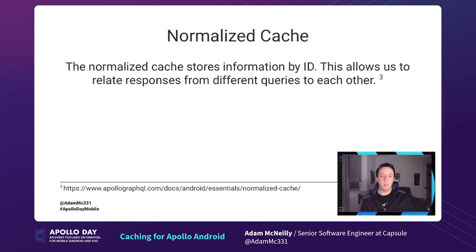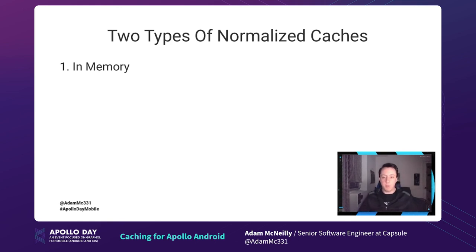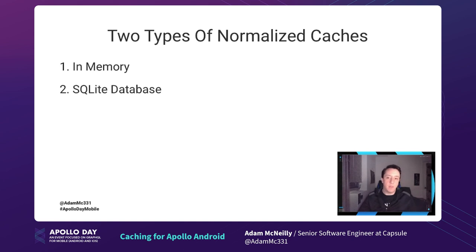The normalized cache stores information by ID, which allows us to relate responses from different queries to each other. We have two types: an in-memory normalized cache, which stores things in memory and lives as long as your application does — when the user kills the app, we lose that information. The second is a SQLite database, where all responses are persisted on-device, so if you kill the app or restart your phone, that information is still there.